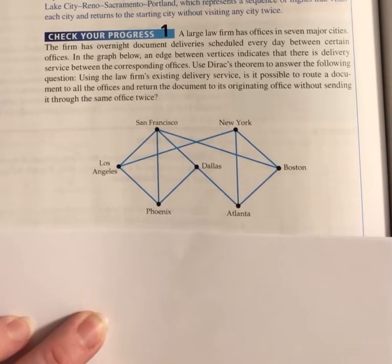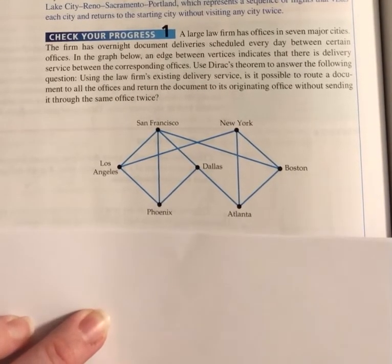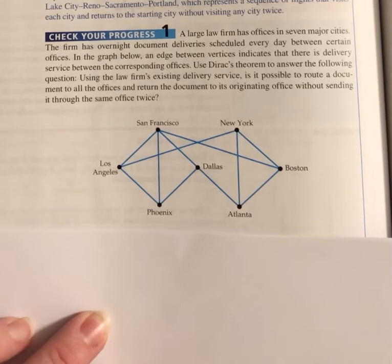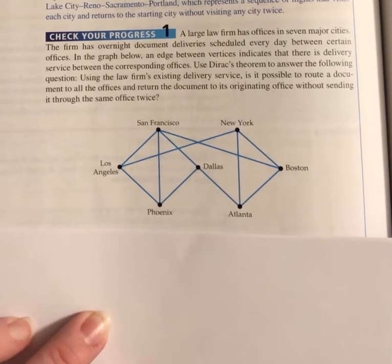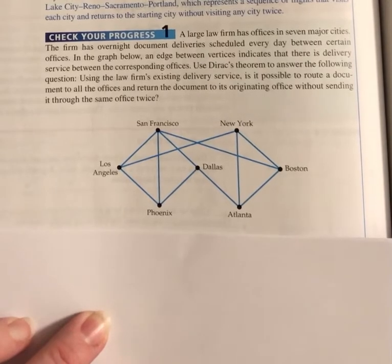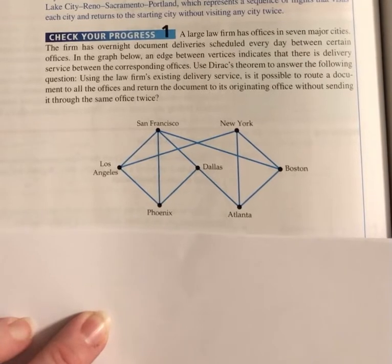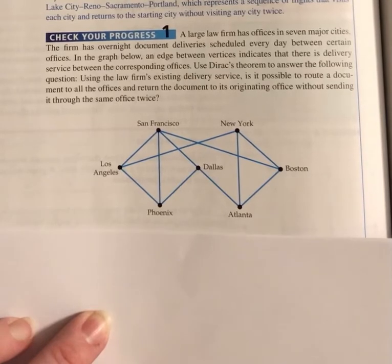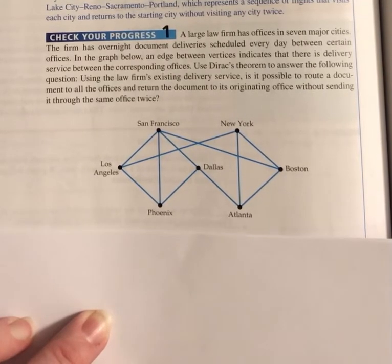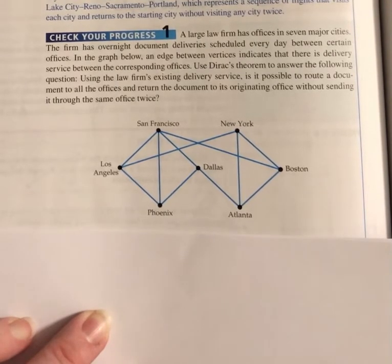Section 5-2, check your progress 1, page 246. A large law firm has offices in seven major cities. The firm has overnight document deliveries scheduled every day between certain offices. In the graph below, an edge between vertices indicates that there is delivery service between the corresponding offices. Use Dirac's theorem to answer the following question: using the law firm's existing delivery service, is it possible to route a document to all the offices and return it to its originating office without sending it through the same office twice?